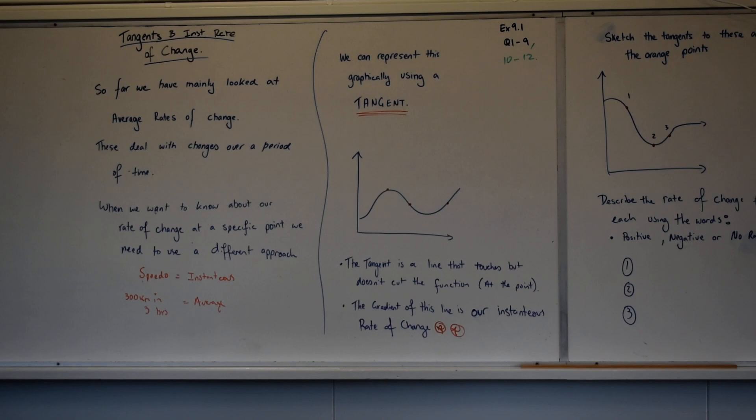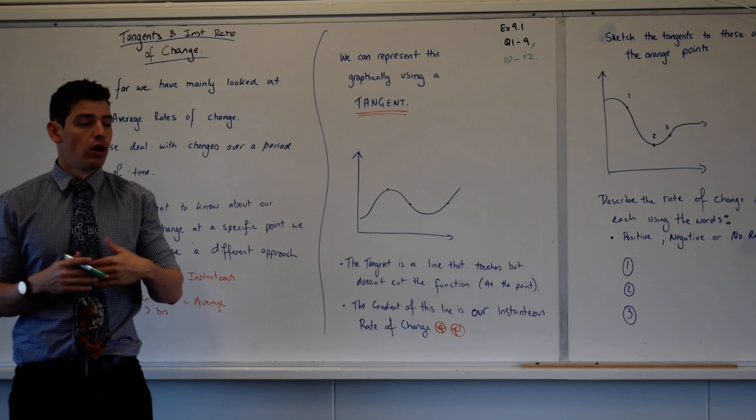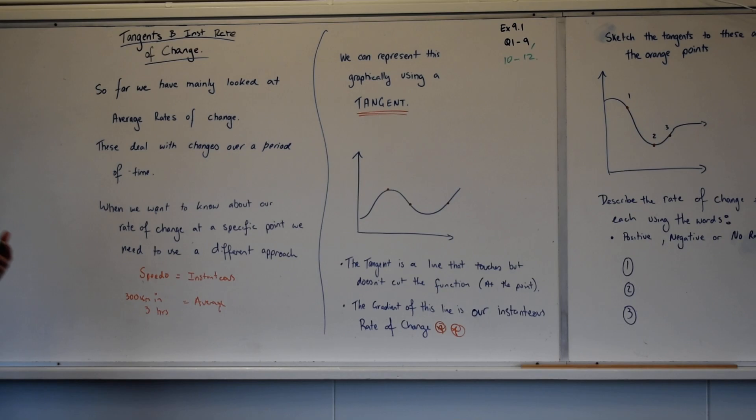Alright, so we look at rates of change. We've looked very specifically at average rates of change at this point in time. So we pick two points, we look at the change in Y and the change in X. You get the gradient from there.